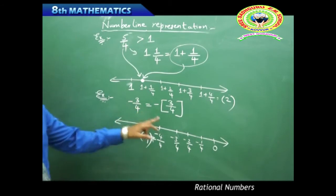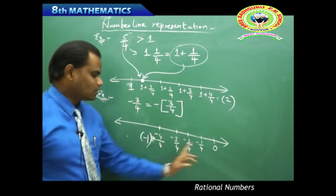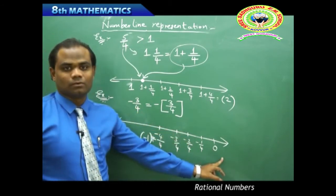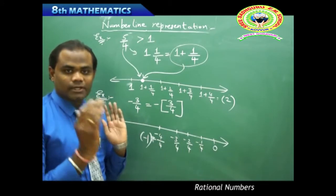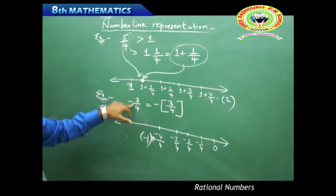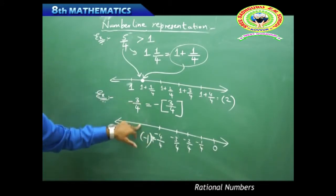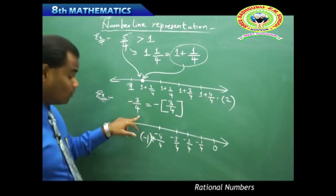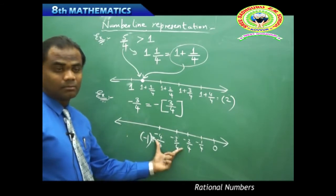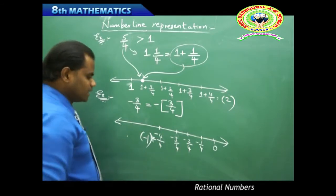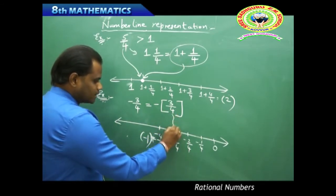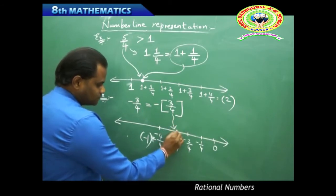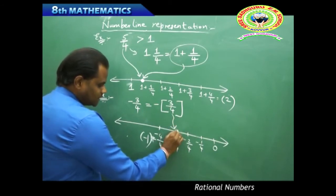The value minus 3/4 lies between minus 1 and 0 — the least being minus 1 and the highest being 0. I clearly identify negative 3/4 at the third division point between minus 1 and 0, and that is where I mark the value on the number line.